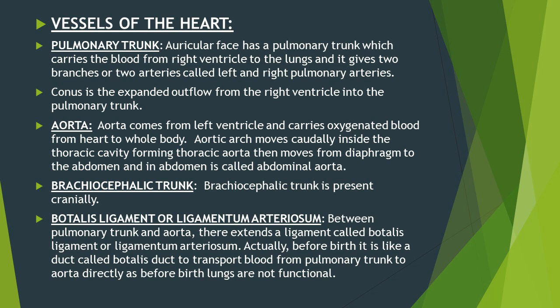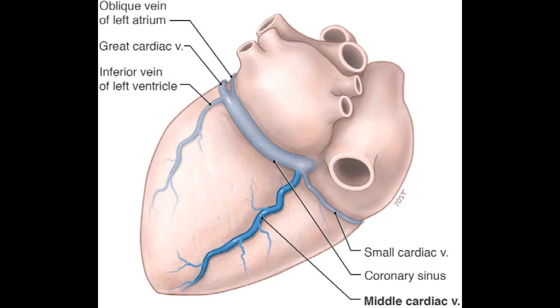The right atrium also receives oxygenated blood provided by the heart itself. The right atrium receives blood from the heart through the coronary sinus, which collects venous blood from the heart and pours it into the right atrium.